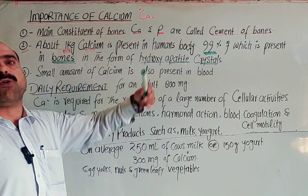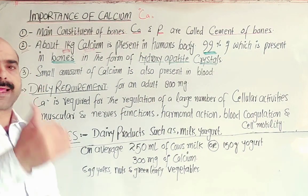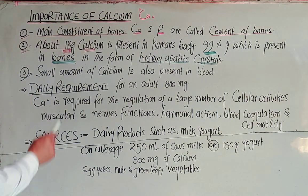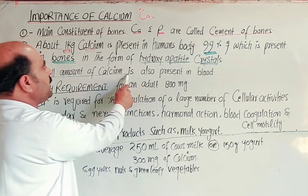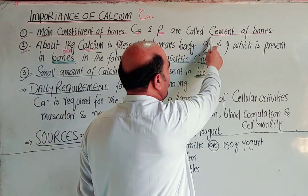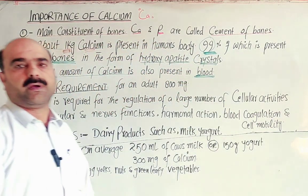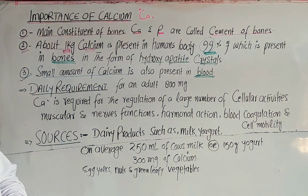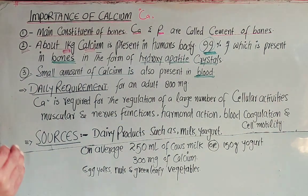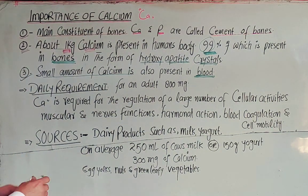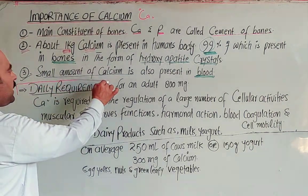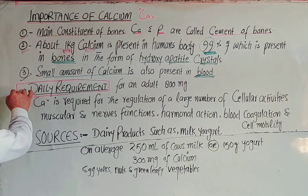A small amount of calcium is also present in the blood. Ninety-nine percent is found in bones and teeth, while a smaller percentage is present in blood plasma as well.